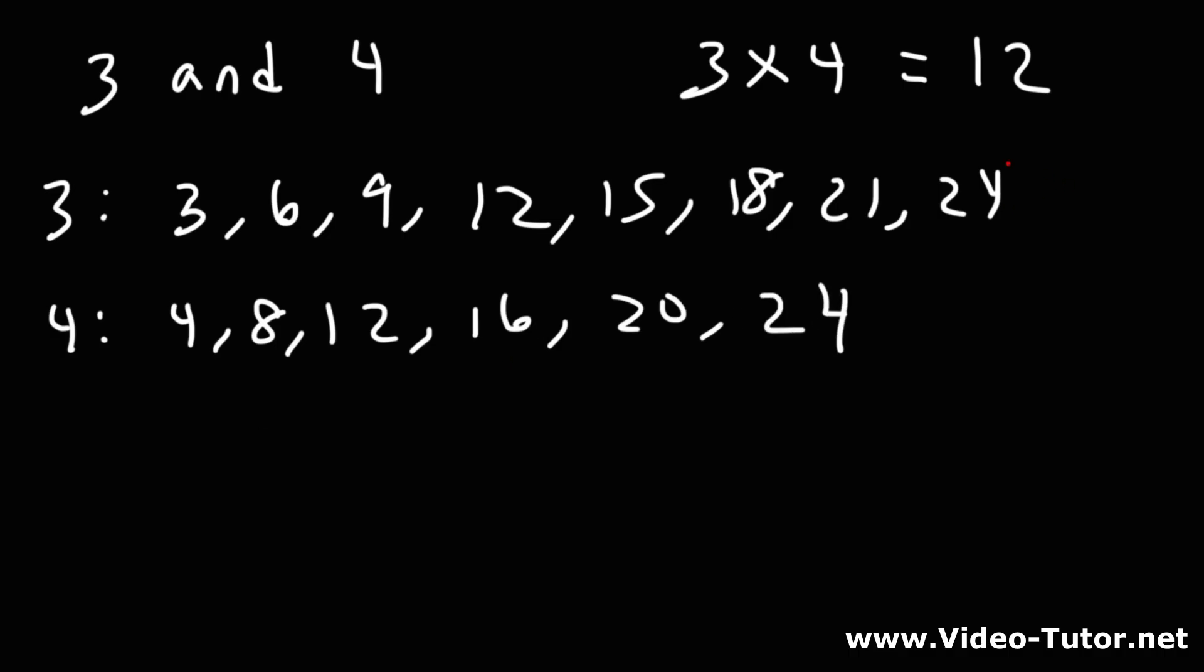So we can see that 24 is a common multiple, and 12 is a common multiple, but 12 is the least common multiple of 3 and 4. It's the lowest that we could find. So that's the answer. It's 12.